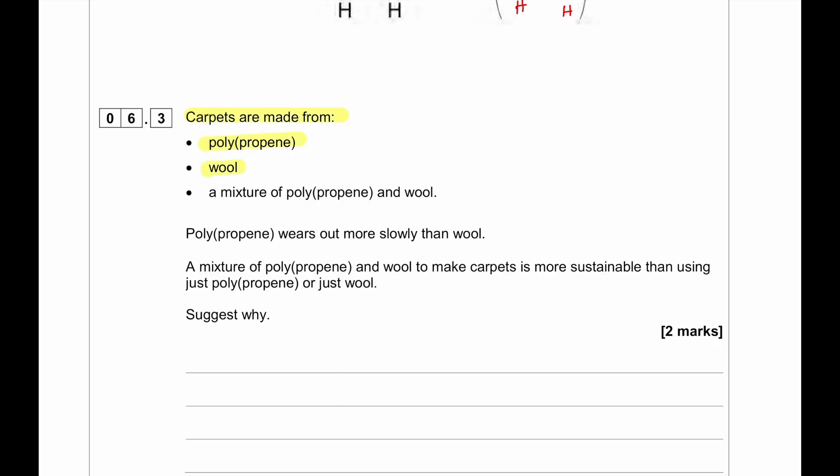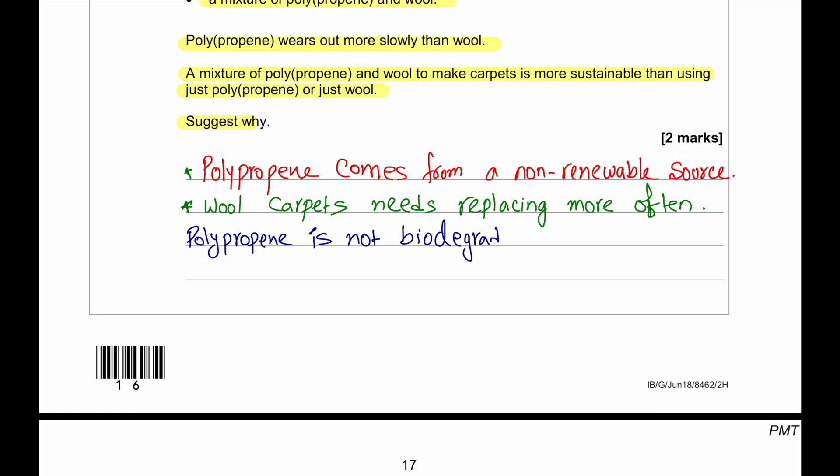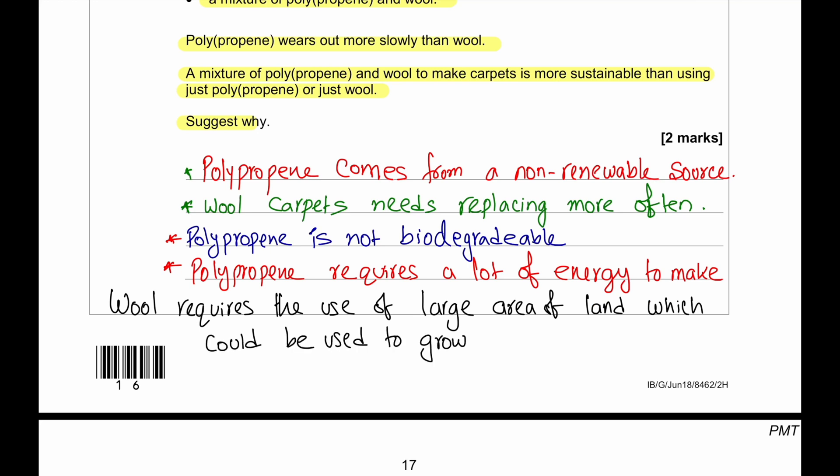Carpets are made from polypropene, wool, a mixture of polypropene and wool. Polypropene wears out more slowly than wool. A mixture of polypropene and wool to make carpets is more suitable than using just polypropene or just wool. Suggest why. Polypropene comes from non-renewable source. Polypropene requires a lot of energy to make. Polypropene is not biodegradable. A wool carpet needs replacing more often. Wool requires the use of large areas of land which could be used to grow food and crops. So using a mixture of both of them provides an advantage that we have a certain proportion from a non-renewable source and certain proportion from a renewable source so as not to pressurize both of their sustainability.